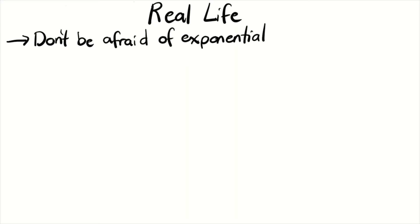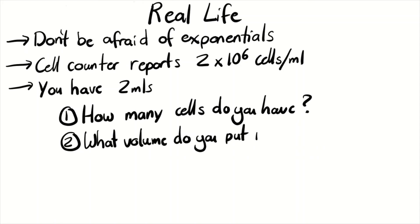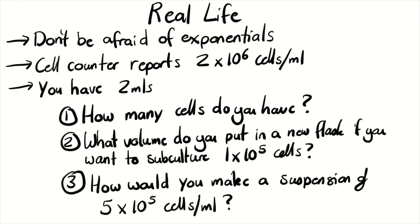In real life, we don't get easy numbers like 2 or 10 cells per mil — usually there are exponentials. Don't be afraid of that, because the equations are exactly the same. Your cell counter might report 2 × 10⁶ cells per mil. Given that you have 2 mils: how many cells do you have in total? What volume should you put in a new flask to subculture 1 × 10⁵ cells? And how would you make a suspension of 5 × 10⁵ cells per mil?